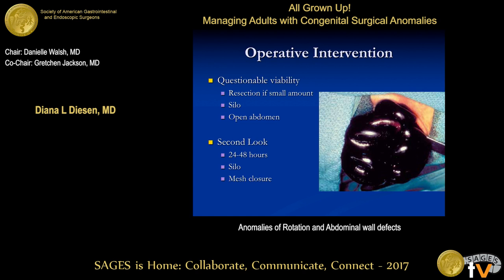Unfortunately, some of these patients present with midgut volvulus and can have ischemic bowel. If there's a question of viability and it's a small amount, you can remove it. But it's usually a large amount from the duodenum to the mid-transverse colon. We want to give that bowel a chance — let it pink up in the OR, keep the patient warm, and have a low threshold for using a silo and doing a second look at 12, 24, or 48 hours. This bowel actually did pink up surprisingly.